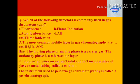The most common mobile phases in gas chromatography are hydrogen, nitrogen, and helium. The moving phase or mobile phase is a carrier gas. The stationary phase is a microscopic layer of liquid or polymer, often on an inert solid support, inside a piece of glass or metal tubing called a column. The instrument used to perform gas chromatography is called a gas chromatograph.